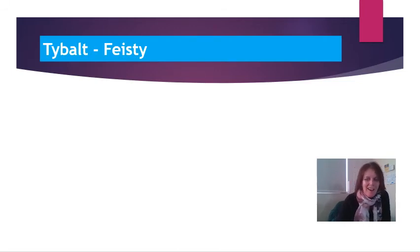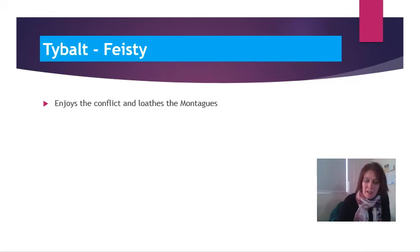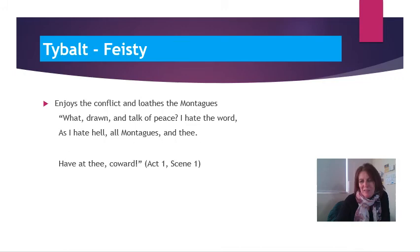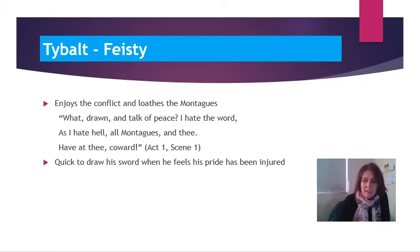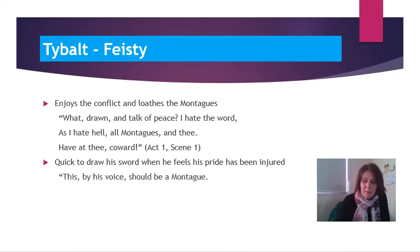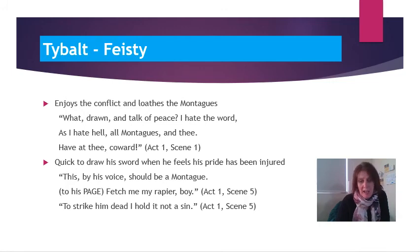Now let's take a look at the character of Tybalt and I'm going to sum him up with the word feisty. Remember Tybalt, Prince of Cats, is always very ready to spring into action and fight — he seems to absolutely love the conflict between the two households and loathes the Montagues, demonstrated right at the beginning of the play in Act 1 Scene 1. Furthermore, he's always very quick to draw his sword when he feels his pride has been injured. When the Montagues attend the Capulet party and he overhears Romeo's voice, he takes that as a huge insult and is very ready to draw his sword and strike Romeo dead.